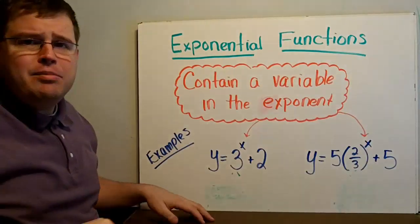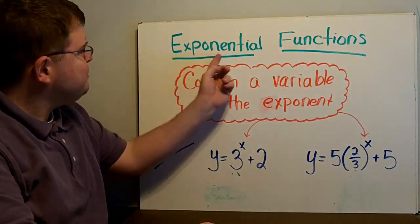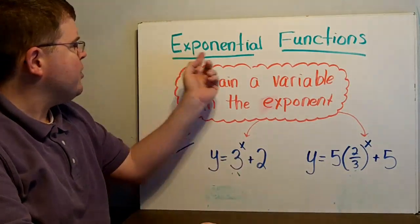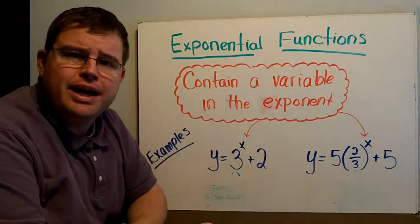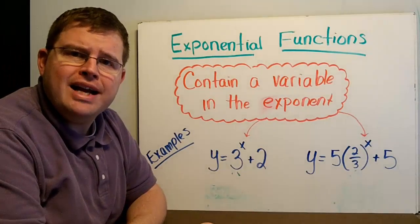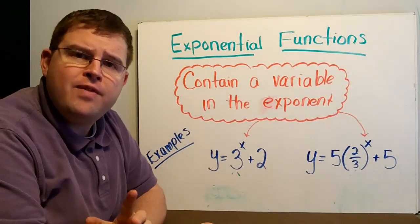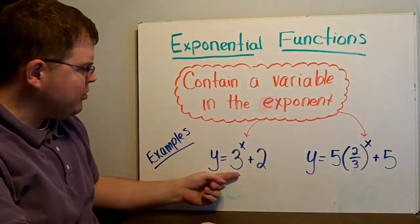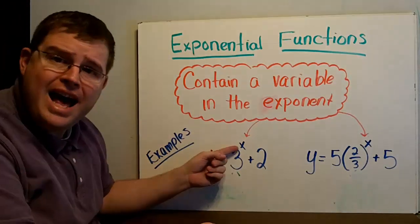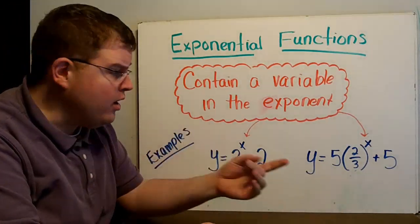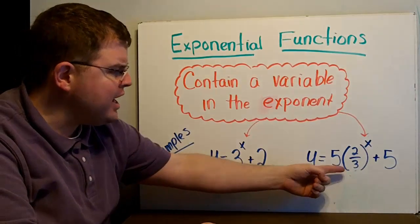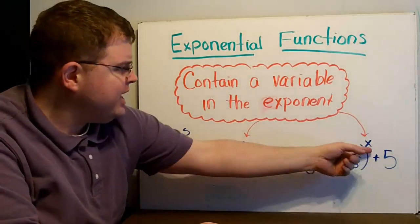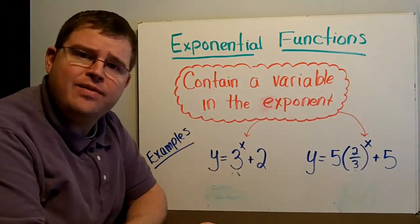As the name suggests, an exponential function involves exponents — notice that the word 'exponent' is right in 'exponential.' What's special about an exponential function? Well, the variable is the exponent. For example, y equals 3 to the x plus 2, or y equals 5 times 2-thirds to the x, plus 5. Notice in both cases, the exponent is the variable.